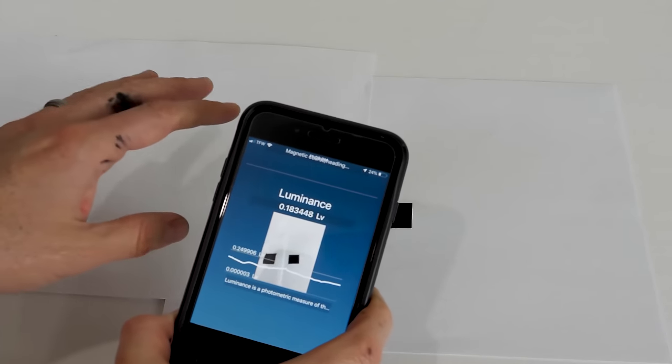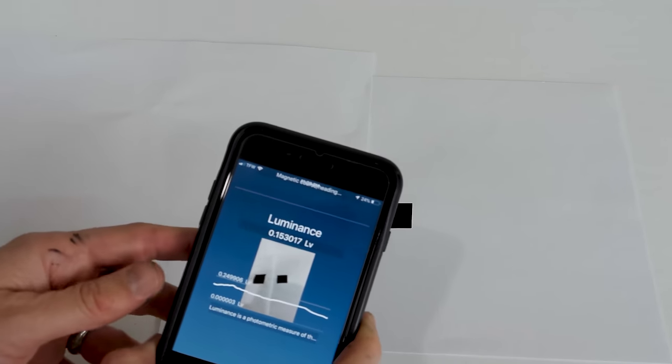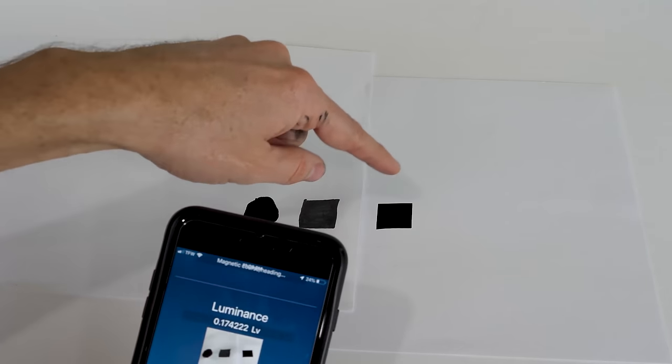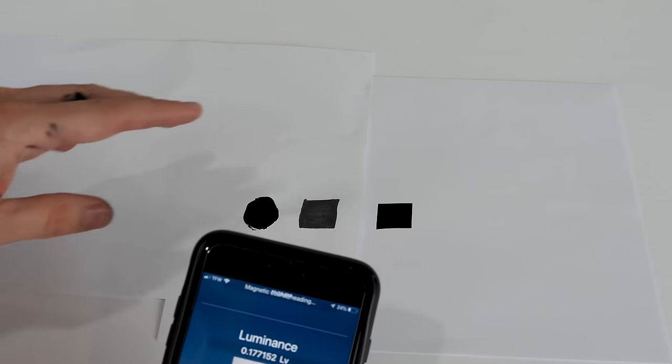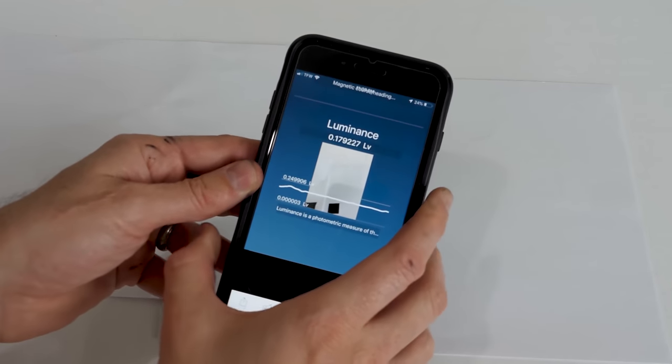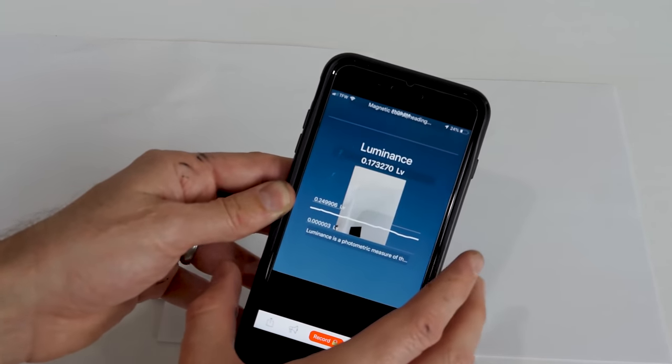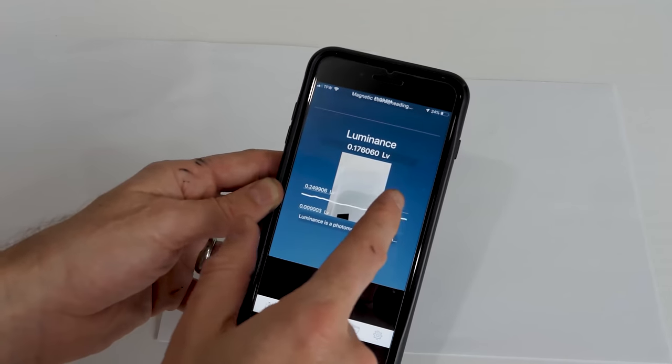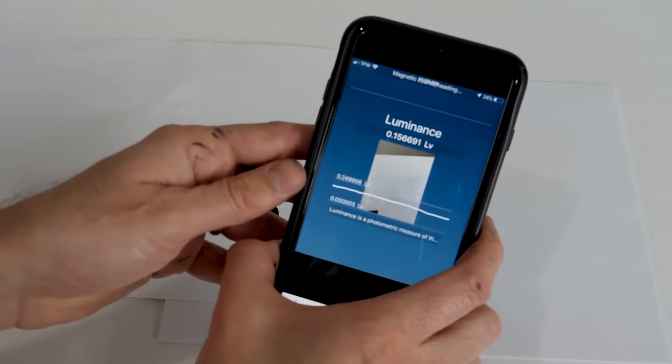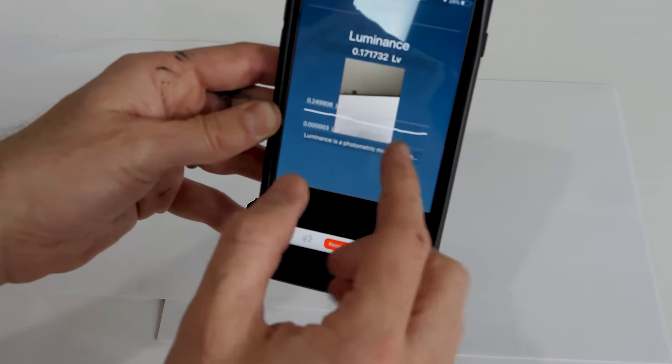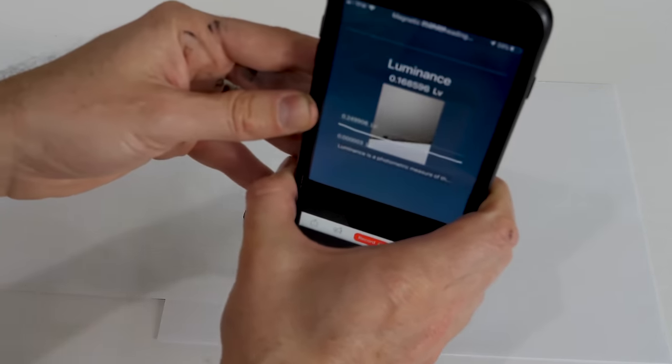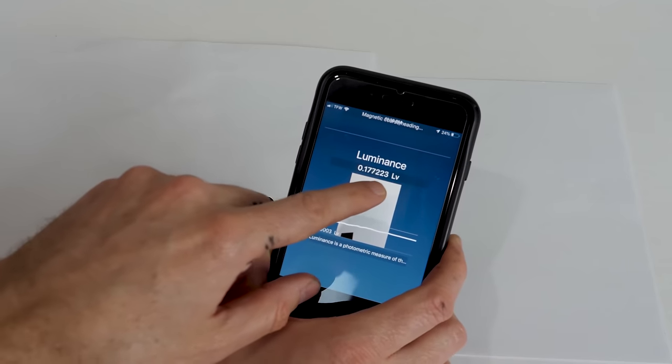So now I'm going to try to quantify how black this actually is because I've been saying it's blacker than Vantablack, but is it really blacker? Well, I'm going to try to use this luminance app on my phone here and what it does is it measures luminance, but it's kind of hard because it does it based on the camera and the camera auto adjusts for brightness and luminance.